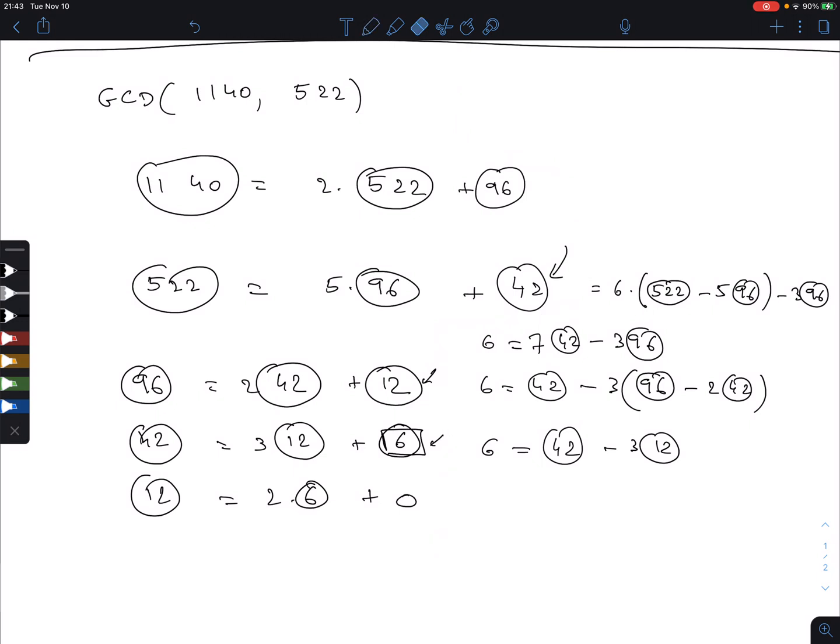This is equal to 1 times 42 and plus 6, so altogether 7 times 42 minus 3 times 96. I'm not using 42, so this becomes 6 times 522 minus 5 times 96 and minus 3 times 96. This is 6 times 522 and we have minus 30 and minus 3, so minus 33 times 96.